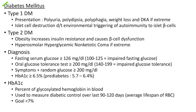Now let us discuss about diabetes mellitus. There are two types: type 1 and type 2 diabetes mellitus. Type 1 clinical features include polyuria, polydipsia, polyphagia, weight loss and diabetic ketoacidosis in extreme cases. Type 1 DM is due to islet cell destruction caused by environmental triggering of autoimmunity to islet beta cells. In type 2 DM, obesity increases insulin resistance and causes beta cell dysfunction. In extreme cases, type 2 DM can lead to hyperosmolar hyperglycemic non-ketotic coma (HHNK). Other symptoms like polyuria, polydipsia, polyphagia and weight loss are common to both types.